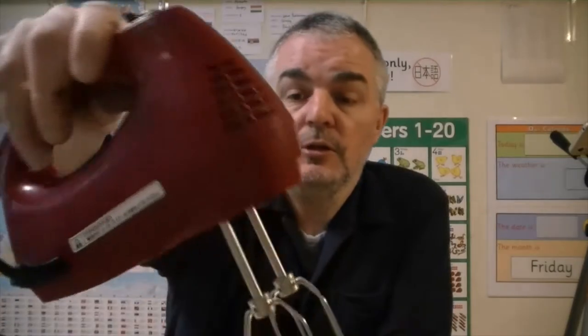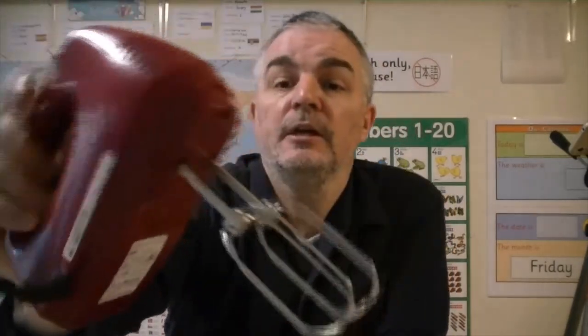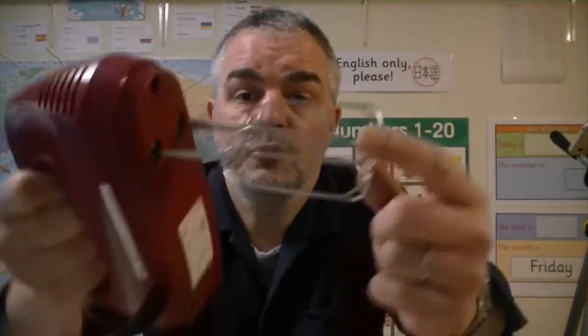So this is our hand mixer. Our hand mixer is used for making cakes or whisking egg yolks or cream and comprises of two beaters, only two beaters, spinning around and a very simple control.